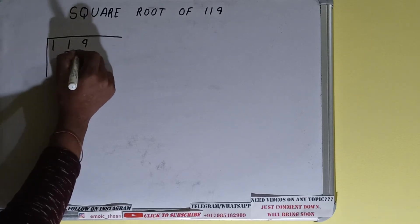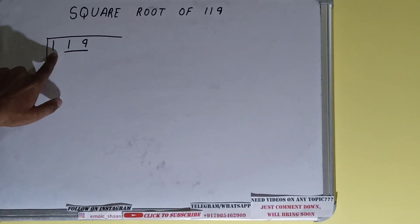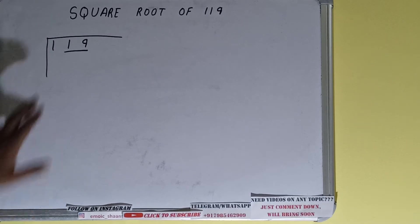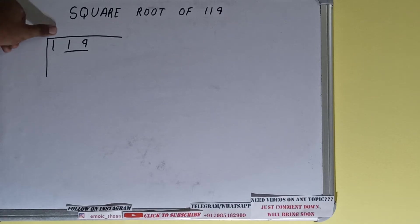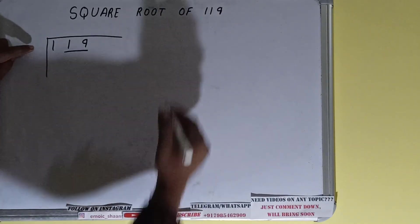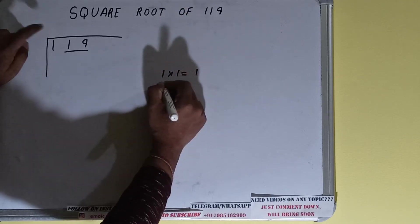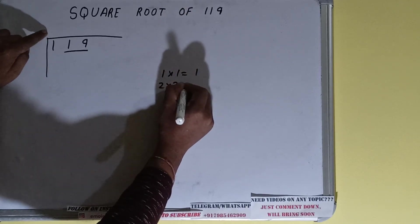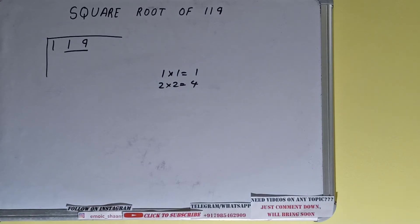One pair is formed on the right, and one digit is left out on the left. We'll divide the leftmost digit first, then bring down numbers in pairs. The rule is: whatever number we use in the quotient, we have to use in the divisor as well. If we use 1, it's 1; if we use 2, we get 4, which is greater than 1.